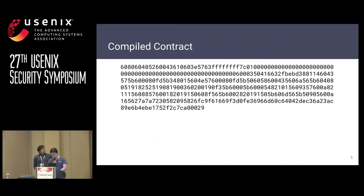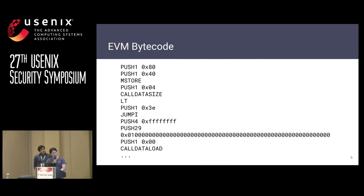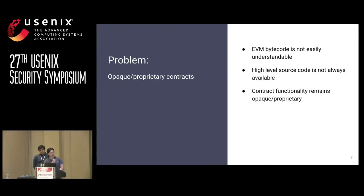The problem with the high-level representation is that the EVM cannot directly understand it, so instead it needs to be compiled into this form. Essentially, this is an encoding of the EVM bytecode, which are low-level operations provided by the Ethereum Virtual Machine. As we can see, the problem with the bytecode is that it's not easily understandable, and if the high-level source code is not available, the contract functionality will appear to be opaque to us.